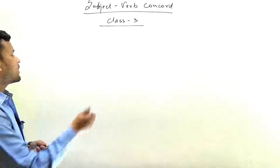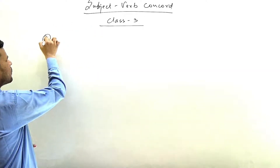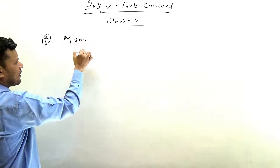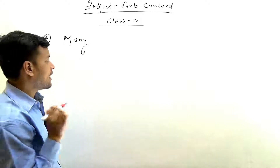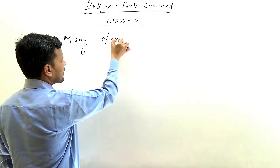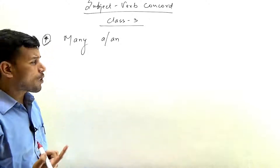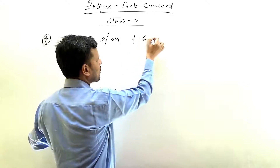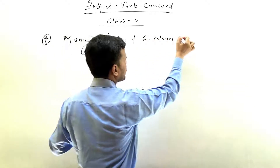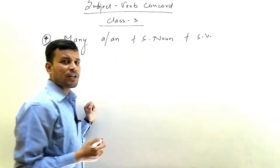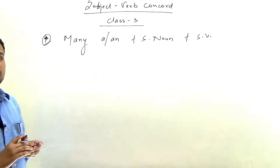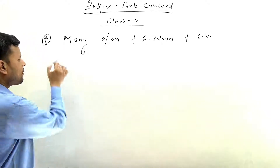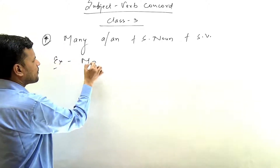Now let's look at the next rule about 'many.' 'Many' by itself is plural, but when article 'a' or 'an' is added — 'many a' or 'many an' (depending on the following noun) — the noun after it will be singular. And obviously, when the noun is singular, the verb will also be singular. For example: 'many a man.'